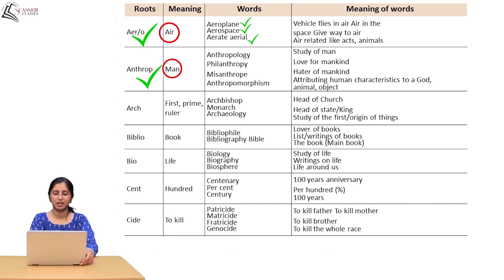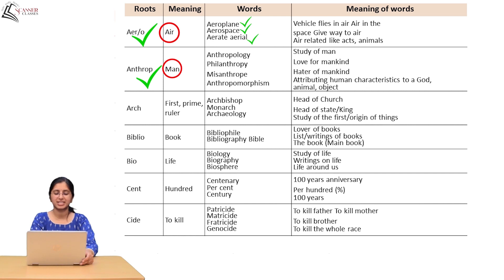The root 'cide' means to kill. So patricide means to kill a father. Matricide means to kill a mother. Fratricide means to kill a brother. Genocide means to kill the whole race.